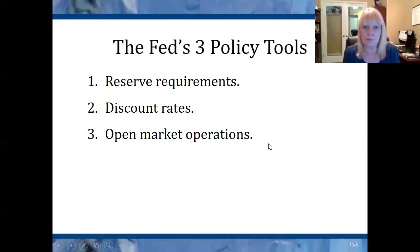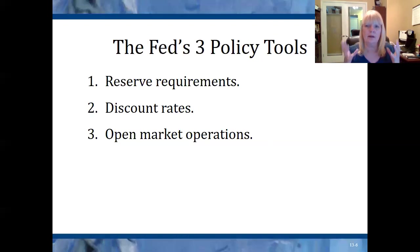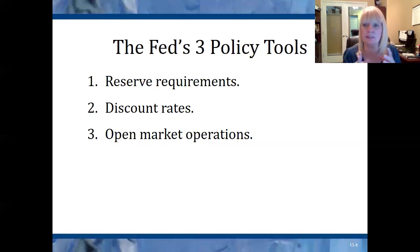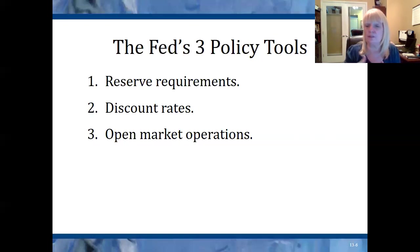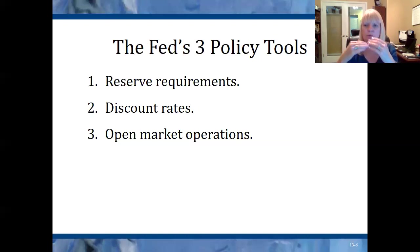What really changes the money supply is the third tool: open market operations. Open market operations is the Federal Reserve's ability to buy and sell government bonds. Before explaining exactly how that works, remember that the money supply includes all money deposited in the banks, as well as cash and things like traveler's checks. It does not include money tied up in investment accounts like stocks, bonds, or government securities. So to increase the money supply you need to get more money into the banks; to decrease it, you move money out of the banks and into these investment vehicles.